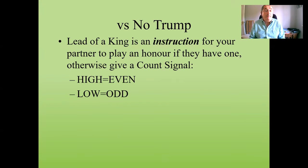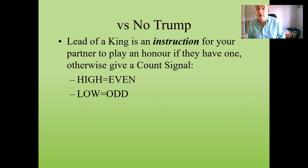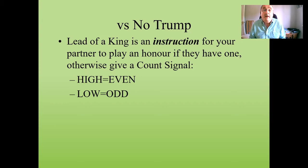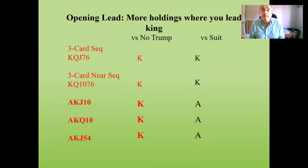To summarize: against no trump, the lead of a king is an instruction for your partner to play an honor if they have one; otherwise they give a count signal. A high card indicates an even number of cards they started with, and a low card indicates an odd number. This count signal is the same as used in other situations — high shows even, low shows odd.